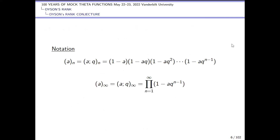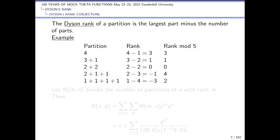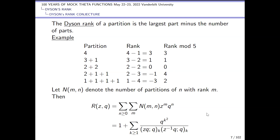Here's an example of Dyson's rank: there are five partitions of 4. For example, this partition has two parts and its largest part is 3, so 3 minus 2 equals 1. We've worked out the rank of each of the five partitions of 4, and you notice that mod 5 all these numbers are different and occur equally often.